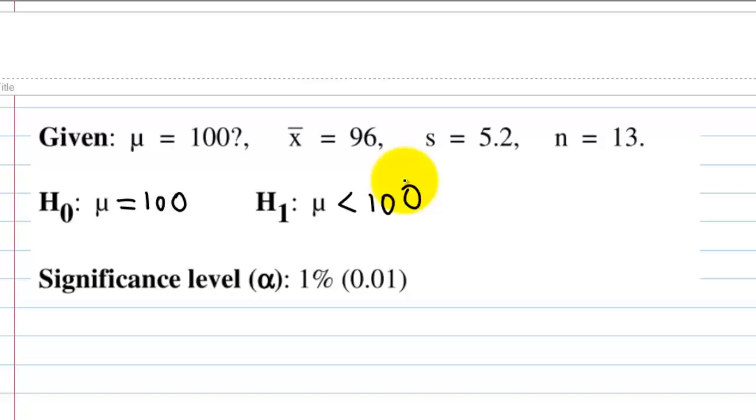The level of significance for this one-tail test is 1% or 0.01 as given by the question.